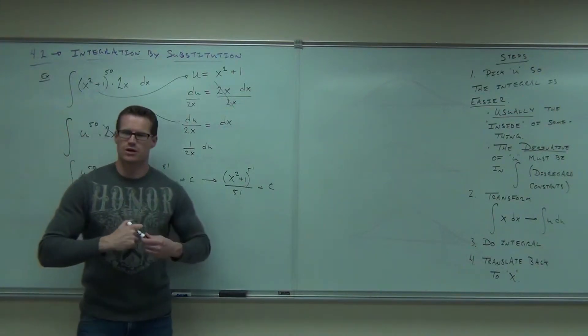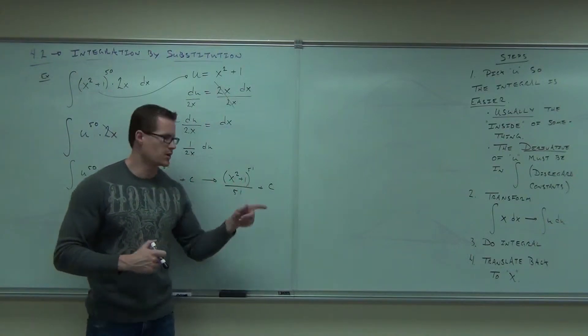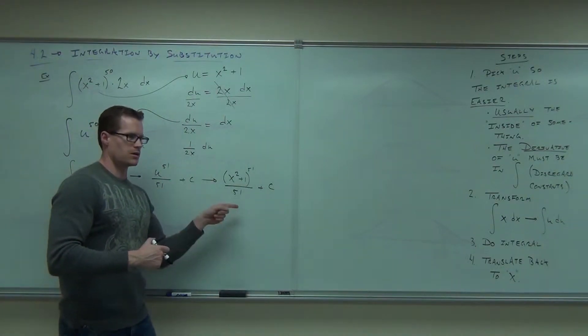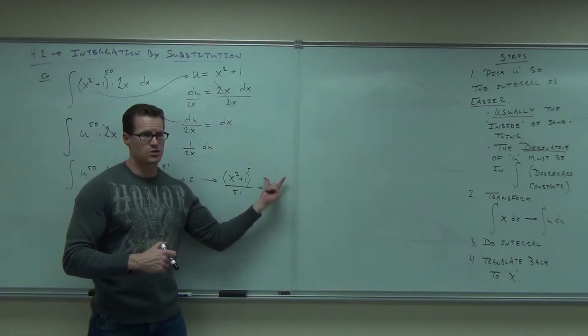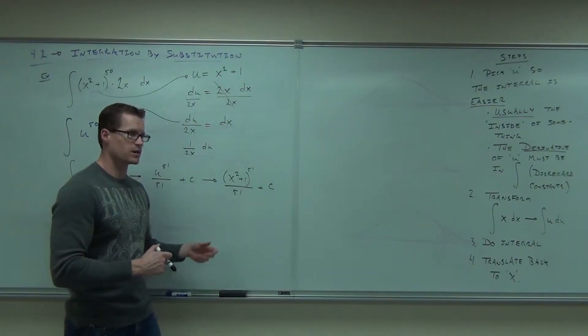Does it actually work if you take a derivative? We can probably do it in our head. It's kind of a simple one. So you bring down the 51, gone, to the 50th power times the derivative inside, because you're using chain rule, that gives you 2x. That is the appropriate integral. That's it.